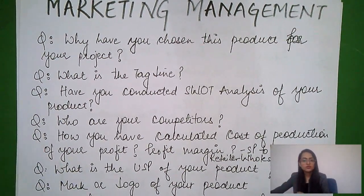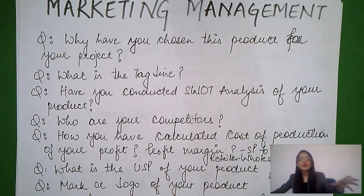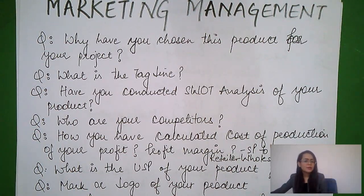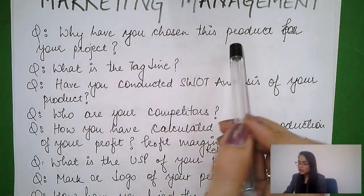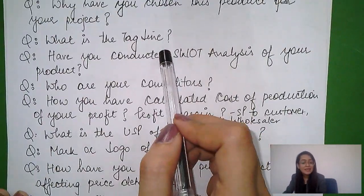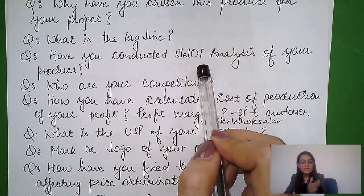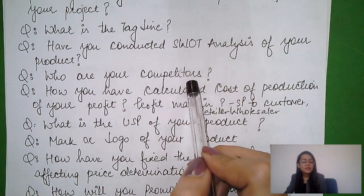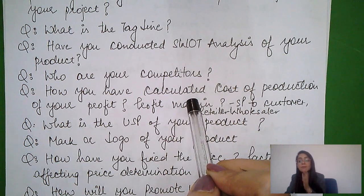In a marketing project, you choose a product, keep a name, decide the price, create a tagline, define your USP, and plan packaging and labeling. If you've covered marketing, the teacher can ask: why have you chosen this product? What is your tagline? What is your SWOT analysis — that is strengths, weaknesses, opportunities, threats? Who are your competitors? How is your cost of production, profit margin, and selling price?